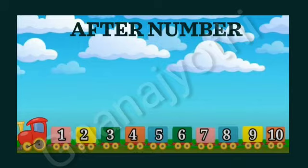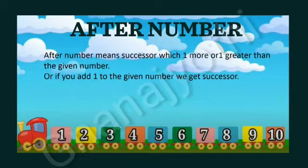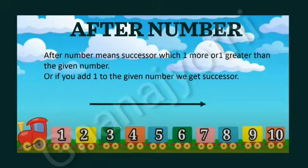Let us start from after number. After number means successor — which is one more or one greater than the given number. Or, if you add one to the given number, we get the successor. The after number will always be in the forward direction.